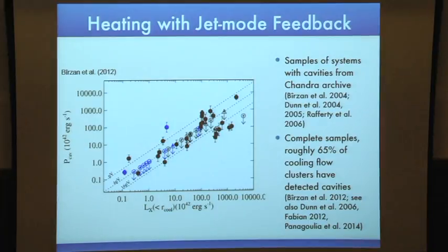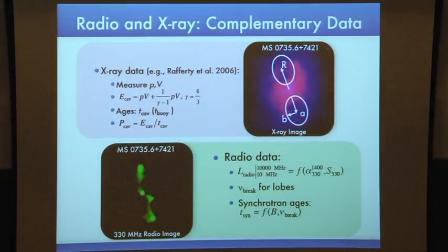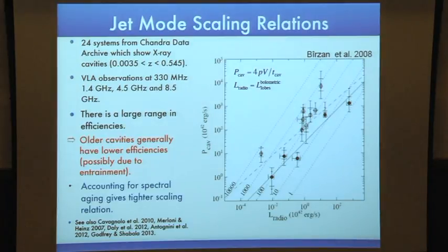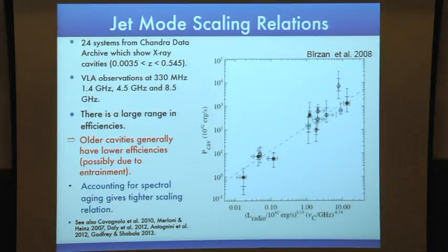Most of my early PhD research was focused on finding a relation between the radio power and the cavity power, to use radio as a proxy to derive cavity power. We used both X-ray to get cavity power and radio to get the volumetric radio luminosity, then plotted cavity power versus volumetric radio luminosity for 124 systems with VLA observations at four frequencies. We see a wide range between cavity power and radio luminosity — this ratio ranges from a few to a few thousands — but the median is around 100, which agrees with theory. Older cavities tend to have higher ratios, and accounting for spectral breaks gives a much tighter relation.